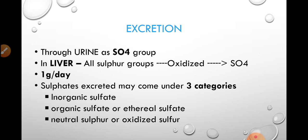Sulfur is excreted in the form of sulfate. This conversion occurs in the liver, where all sulfur groups are oxidized into sulfate. About 1 gram per day of sulfur is excreted. The sulfate excreted may fall under three categories: inorganic sulfate, organic sulfate or ethereal sulfate, and neutral sulfate or oxidized sulfur.